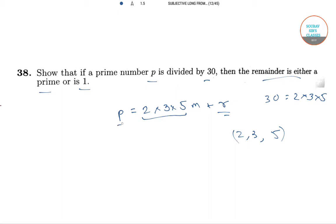For example, if R would have been 14, then P would become 2 into 3 into 5m plus 7. Then, P can be factorized.